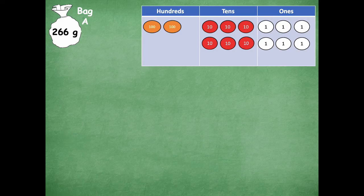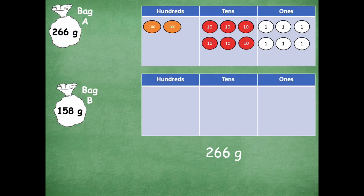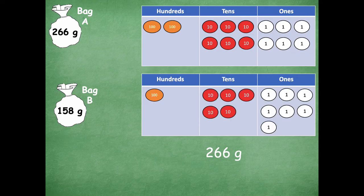Well then I have this other bag. Let's just say it's called bag B. Bag B weighs 158 grams. So let's model that on our place value chart. So we have 100, five tens, and eight ones.